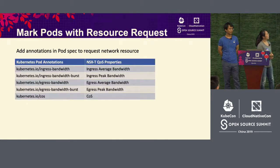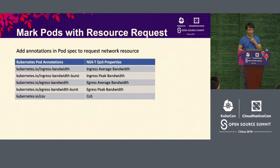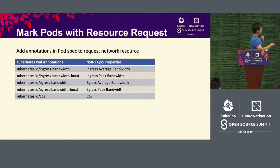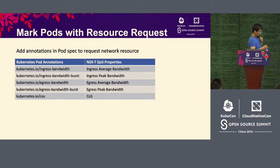After labeling the nodes, you apply for a pod and tell the scheduler how much network resource you need. Here we list ingress bandwidth, ingress bandwidth burst, egress bandwidth, and egress bandwidth burst. Cost is a value for priority — when there is network congestion, it determines whose packets are sent first.